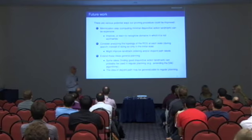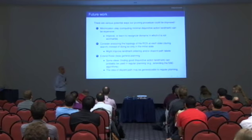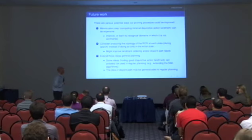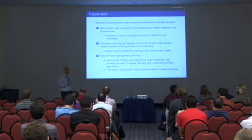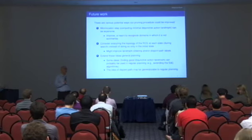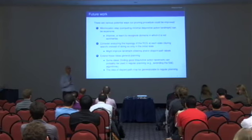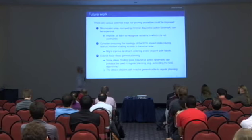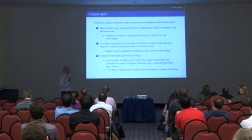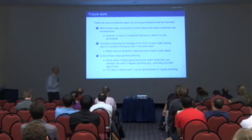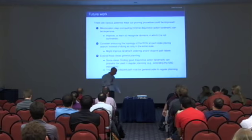Following up on that, one thing we'd like to look at is doing the minimization step more efficiently, or recognizing cases where we shouldn't try to do it at all. We also analyze the causal graph only once initially during landmark generation and ordering — doing it at each state or occasionally might give more up-to-date information during search. Most interesting is extending these ideas to general planning: finding good disjunctive action landmarks can probably be used in regular planning, and the idea of disjoint path commitment may be generalizable as well.